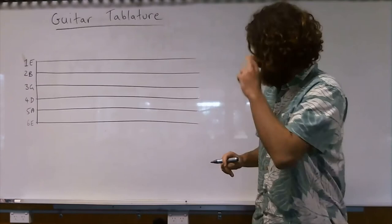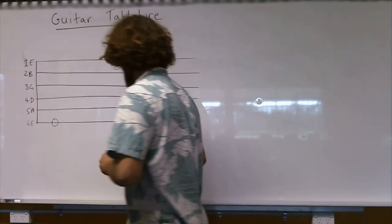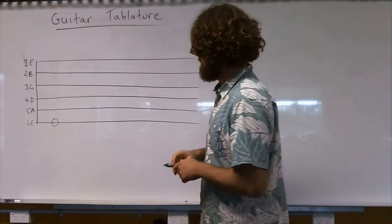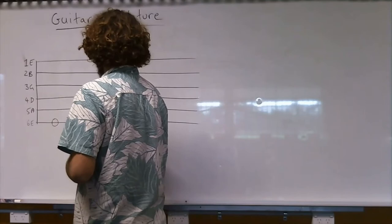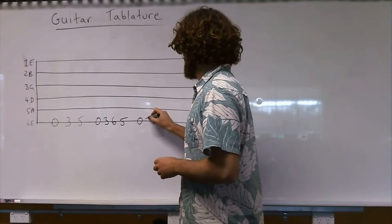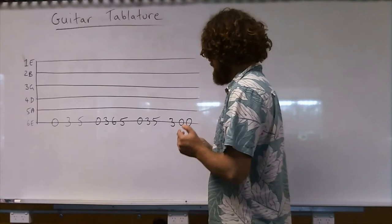A few other things to understand: a zero in TAB means you play that string open — you don't press down any frets. Smoke on the Water goes 0, 3, 5, 0, 3, 6, 5, 0, 3, 5, 3, 0, 0.